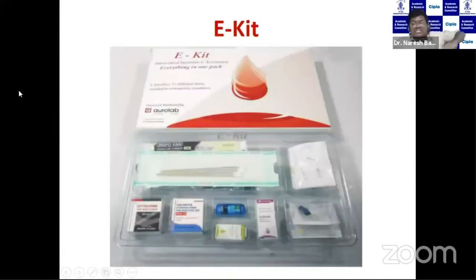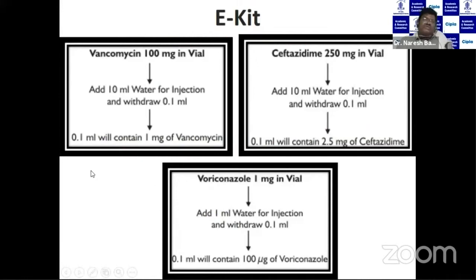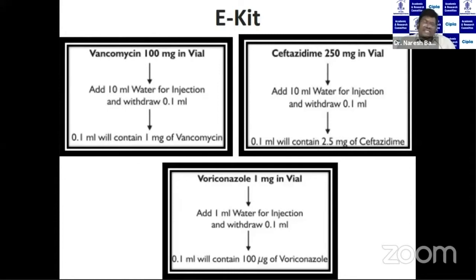The e-kit developed by Oralab overcomes the complexity of drug preparation. Every cataract surgeon should have this kit. It contains everything from drape to antibiotic — 100 mg vancomycin and 250 mg ceftazidime in separate vials. They recommend a single dilution of 10 ml, taking 0.1 ml, but it is better to go for a two-stage dilution — first adding 1 ml, then a second 10-times dilution — to ensure accuracy of the antibiotic concentration.